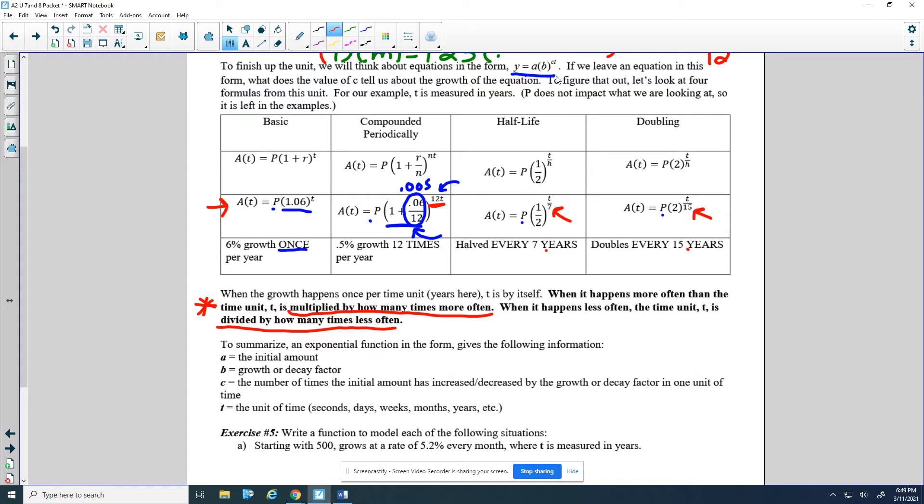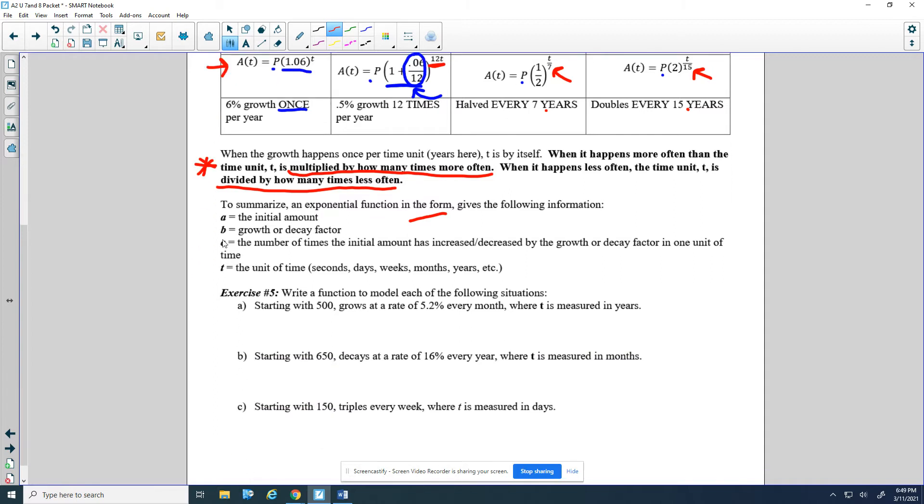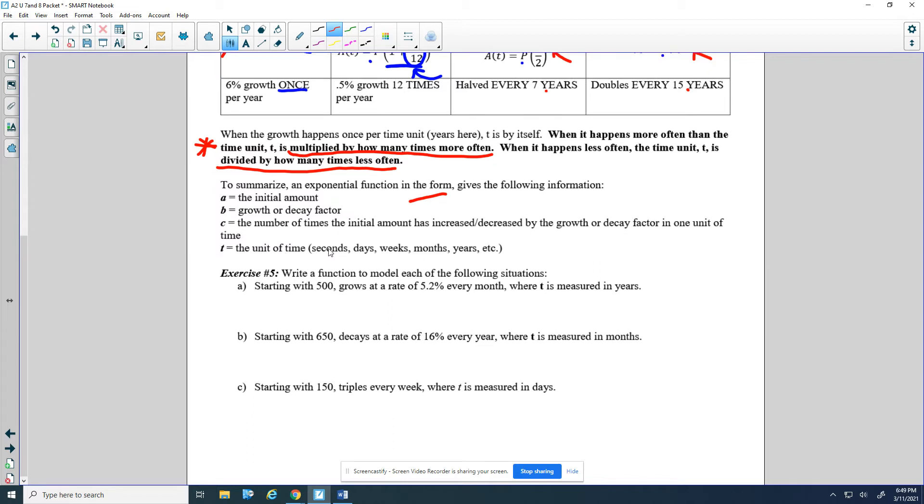To summarize an exponential function in this form, a times b to the ct, gives the following information: a is still the initial amount, b is still the growth or decay factor, and c is the number of times the initial amount has increased or decreased by the growth or decay factor in one unit of time. The unit of time could be any of these: seconds, days, weeks, months, years. We did years up for our examples just to keep things consistent.